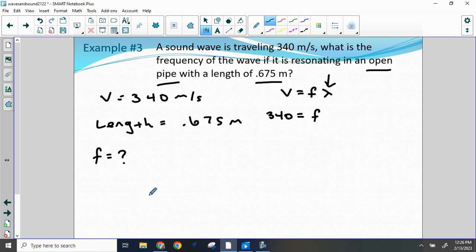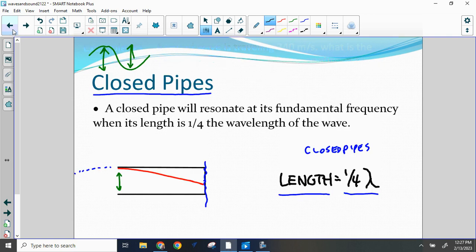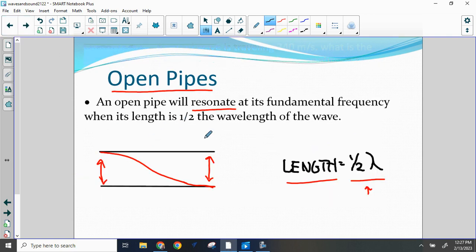So what we want to know then is, what is the wavelength? So if the length of the pipe is 0.675 meters, what's the wavelength? Well, we learned that in an open pipe, the length of the pipe is one-half times the wavelength.